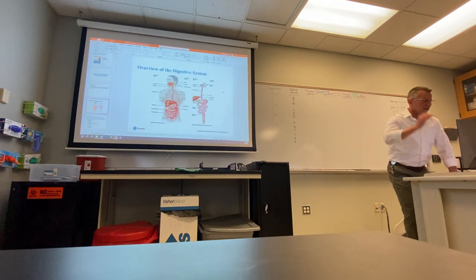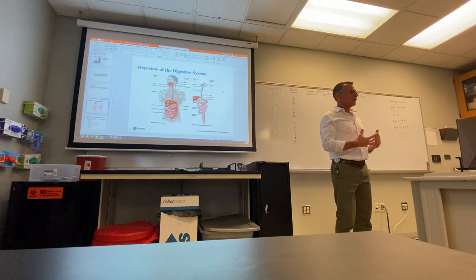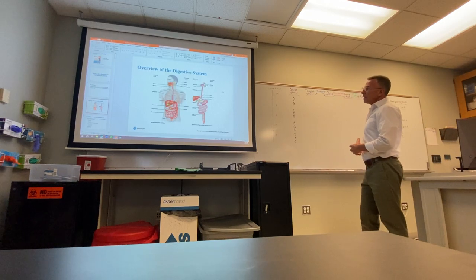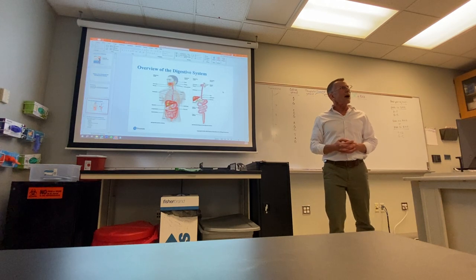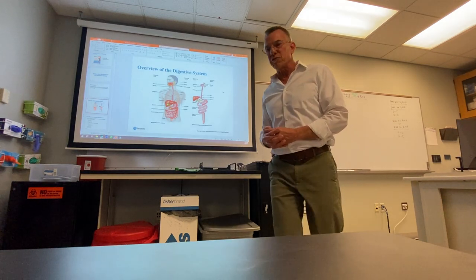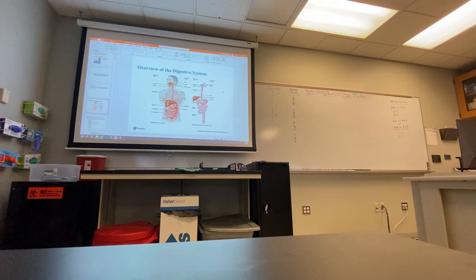Let's cover the digestive system by body regions from memory. Digestion starts in the mouth. What happens there? We chew the food — that's called mastication — and the purpose of mastication is to increase surface area. We also mix it with saliva from the salivary glands.